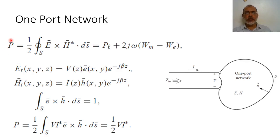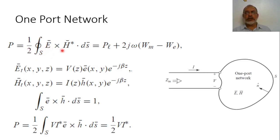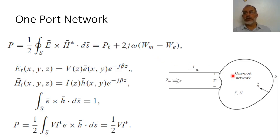In this case, the power transmitted to the network equals half the integration over the closed surface of E cross H conjugate dot ds. The tangential electric field is zero on the conducting walls, so we are interested in the field at the port. This integration yields real and imaginary values: the real value corresponds to the power losses inside the one-port network, while the imaginary value corresponds to the stored electric and magnetic energy.